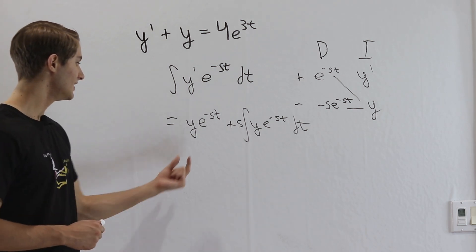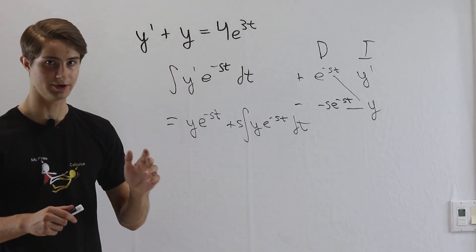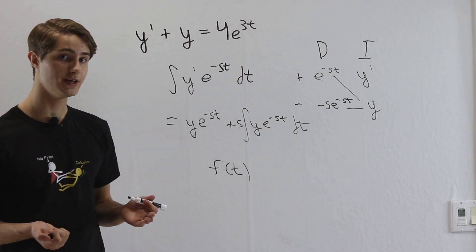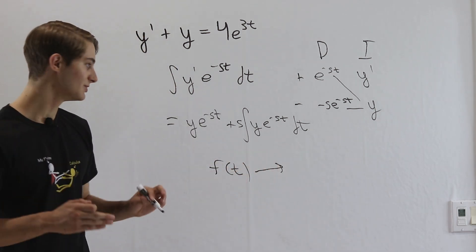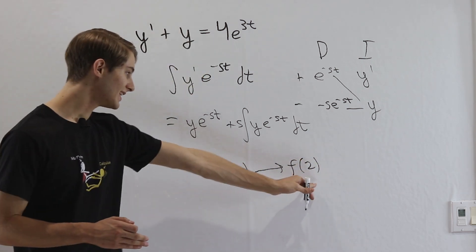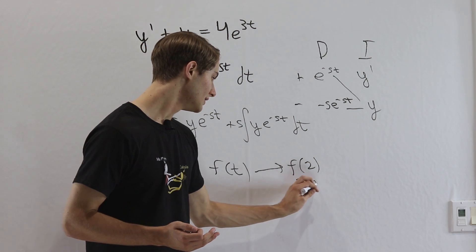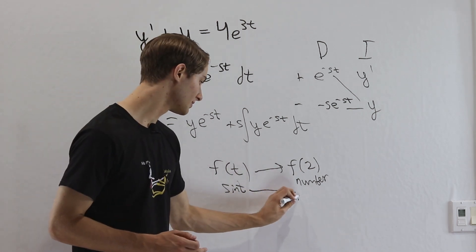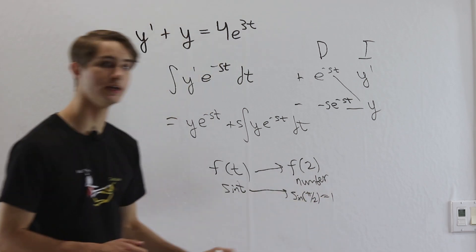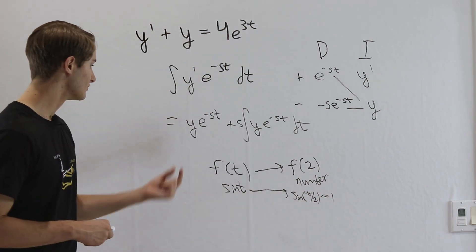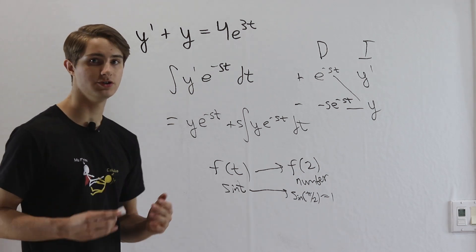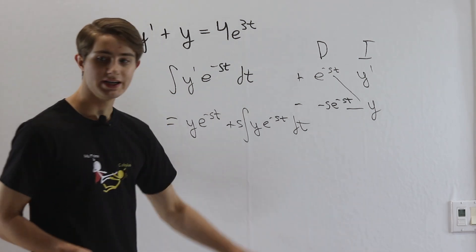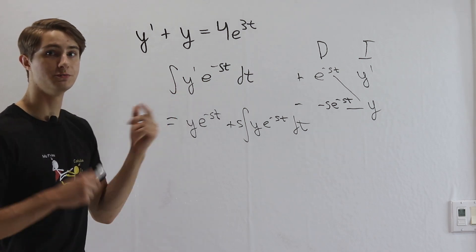Is there a way that we can take y, which is a function, and turn it into a number? If we have some function f(t) and we evaluate it at a specific value — say f(2) — that's just a number. For example, sine of t is a function, but if we evaluate it at π/2, that equals 1, which is a number. So what we really want is to evaluate y at a particular value. We can do that by making our integral a definite integral — adding bounds — because then when we do integration by parts, y·e^(-st) gets evaluated at those bounds, and y at those bounds turns into a number.